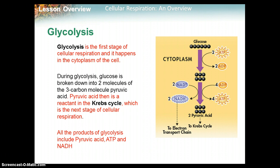Glucose is broken down into two pyruvic acids, each with three carbons — so two molecules of a three-carbon molecule called pyruvic acid. Pyruvic acid is then the reactant for the next stage called the Krebs cycle. Two pyruvic acids go into the Krebs cycle, the next step of cellular respiration.